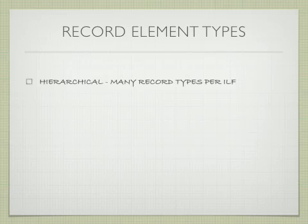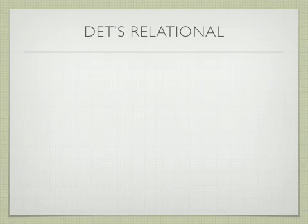Hierarchical has many record types per ILF. Relational generally has one record type per ILF. DETs for relational tables are attributes,